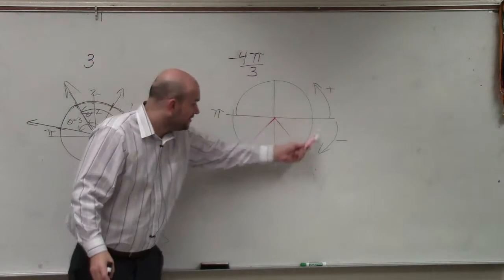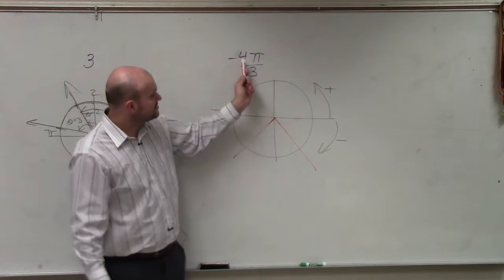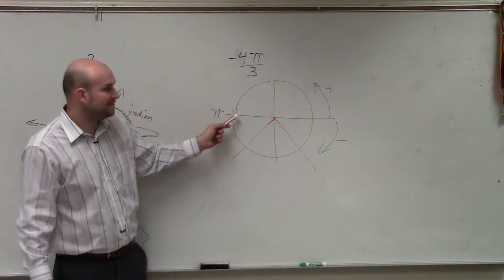So I still have this whole portion of π. I've just broken it up into thirds. So I'm going negative. So I'm going to do negative π over 3, negative 2π over 3, negative 3π over 3.